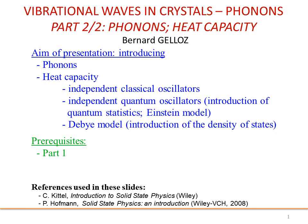Welcome to part 2 of this lecture about vibrational waves in crystals and phonons. In this part we will address what phonons are and the heat capacity. We will introduce phonons, then the heat capacity — going through the classical model, then the independent quantum oscillators (the Einstein model), introducing quantum statistics. Then we will see that the Einstein model is not enough, and we will move to the Debye model, which requires the density of states. The prerequisite is part 1; references are Kittel and the Hoffman book.